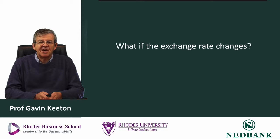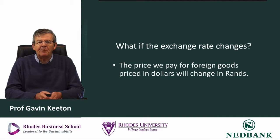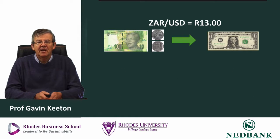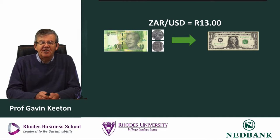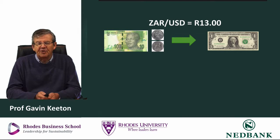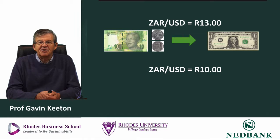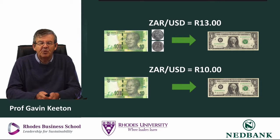What if the exchange rate changes? The price we pay for foreign goods priced in dollars will now change in rands, and the price foreigners pay for what we produce will change in dollars. We started with an exchange rate of 13 rand to the dollar. Now, for some reason — which we'll explain in another video — the rand-dollar exchange rate changes to 10 rand to the dollar. Let's look at what that does to the price of both our imports and our exports.